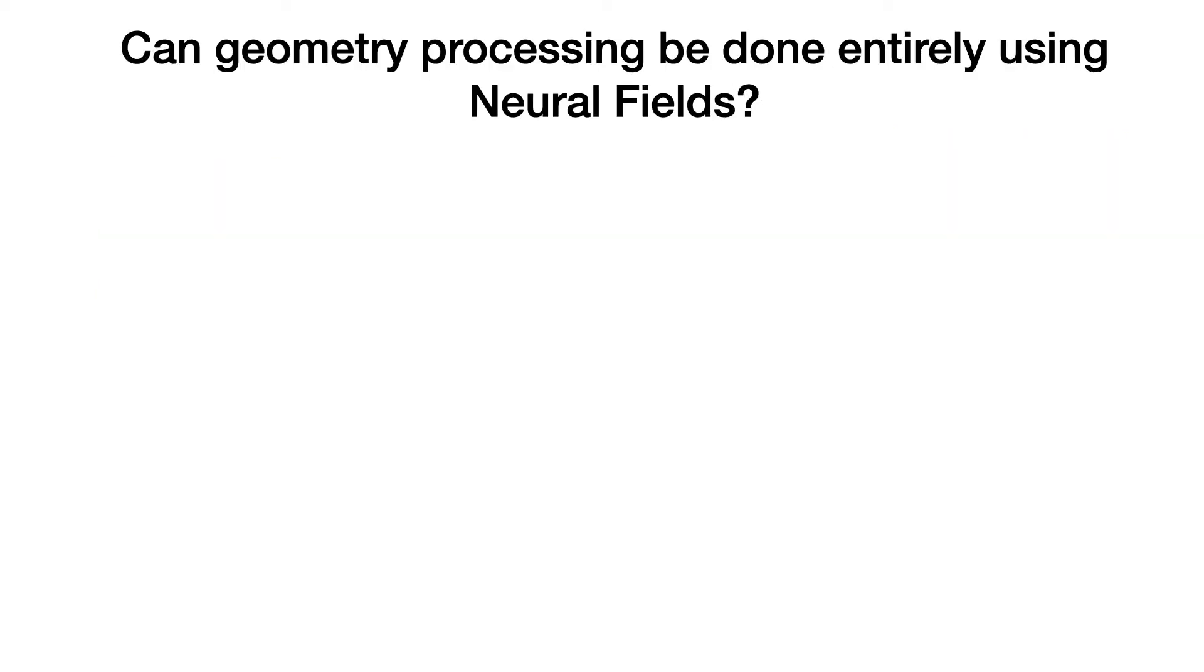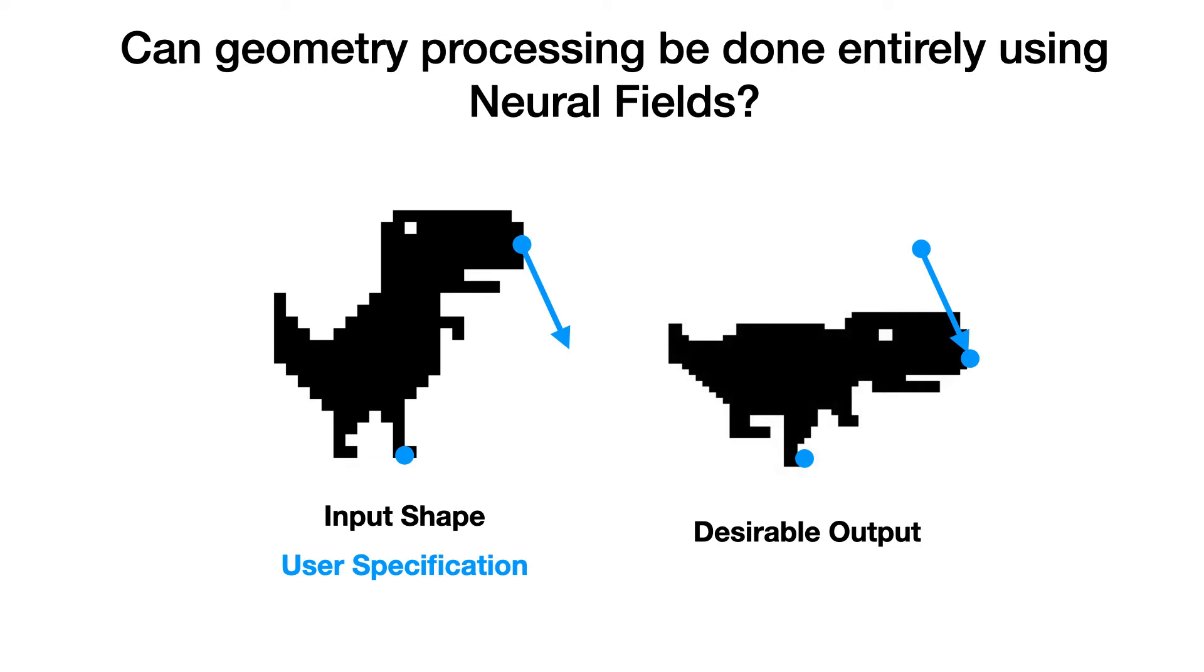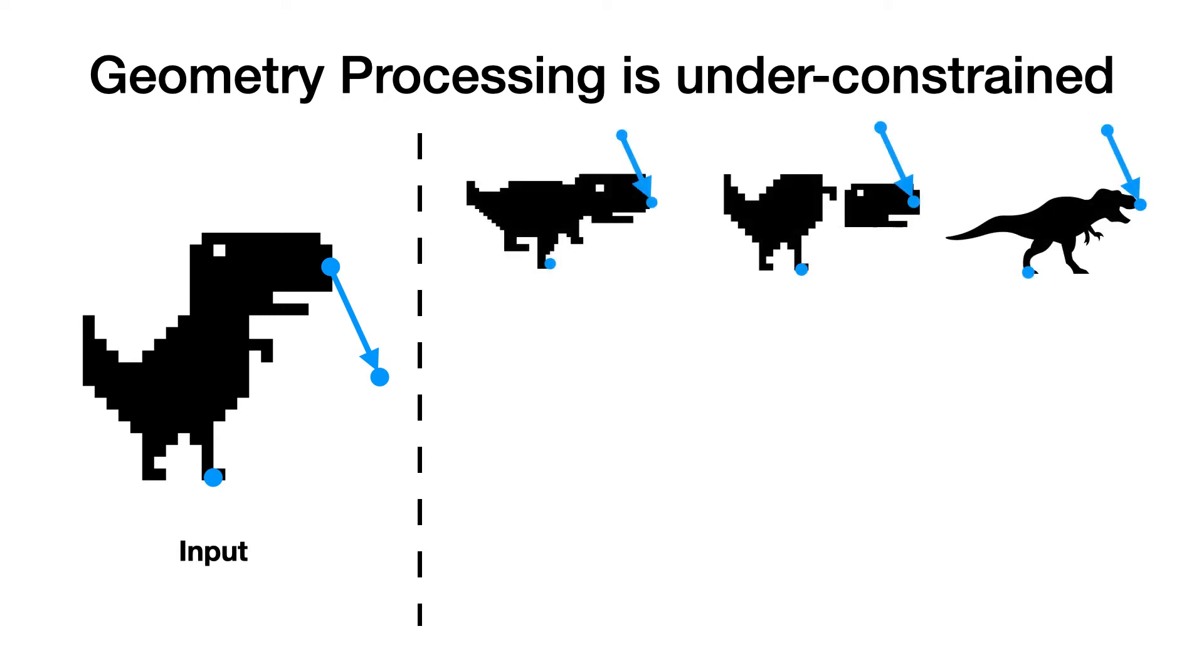Answering this question is non-trivial, since geometric processing is fundamentally an under-constrained problem. Usually the algorithm is given a shape and some user specification as input. The user specifications are usually very sparse, checking one point or clicking several buttons. With such limited input, algorithms are expected to output shapes that fulfill the user specification. It's not hard to see that there are potentially infinitely many plausible answers.